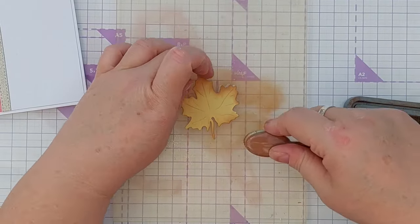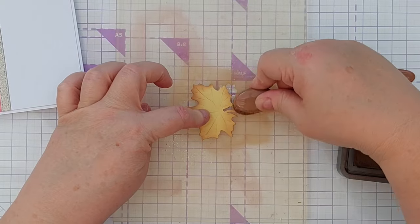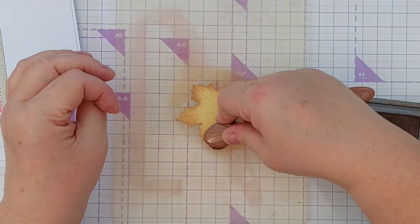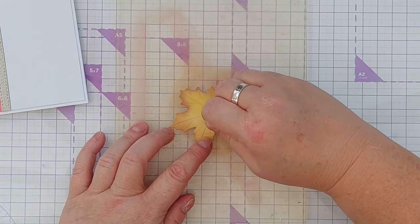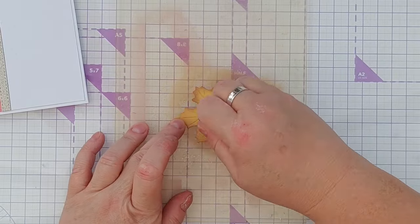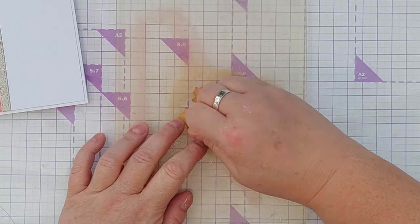I then brought in a sponge finger dauber that already had some spiced marmalade orange distress oxide on and dabbed this around to add a little bit of variation. You can't see it all that much, so I probably could have omitted that step.